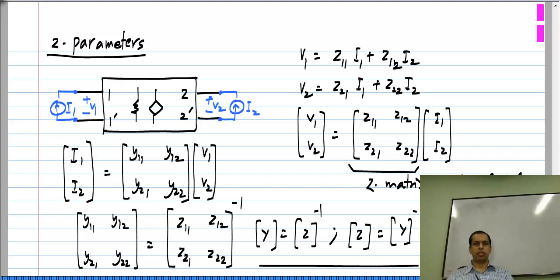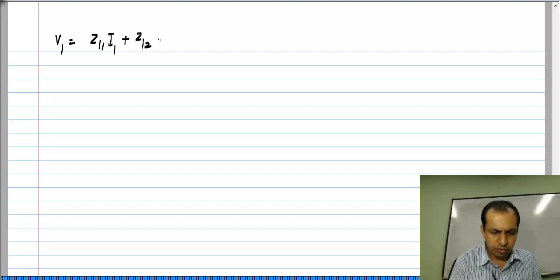Now, it is possible that one or the other of these is not invertible. Perhaps the Z matrix is not invertible or the Y matrix is not invertible in which case you cannot define the other one. So, that is always possible and this is equivalent to having let us say a short circuit which can be specified as 0 resistance, but you cannot specify its conductance, it's infinite. So, it is similar to that. We will see examples of this later.